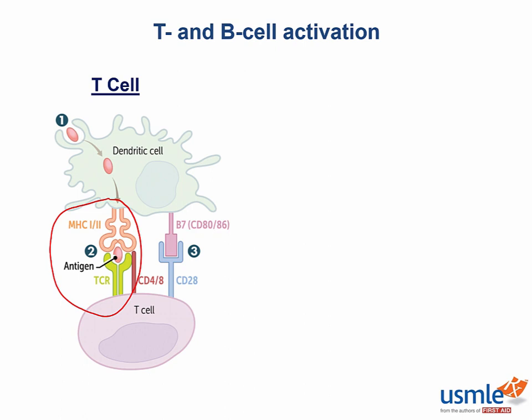B7 on the antigen-presenting cell interacts with CD28. CD28 is on the T cell and acts as the co-stimulatory factor. This is signal number 2.